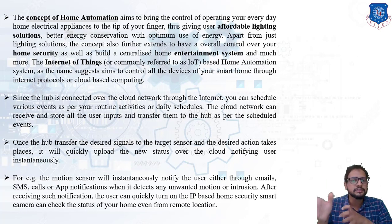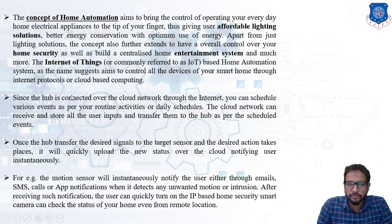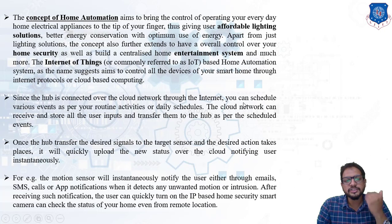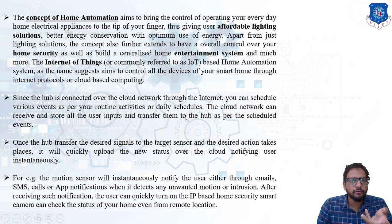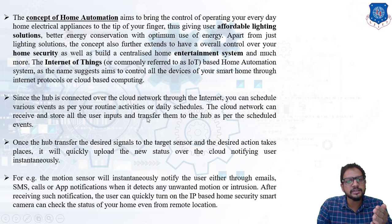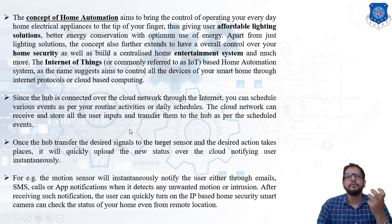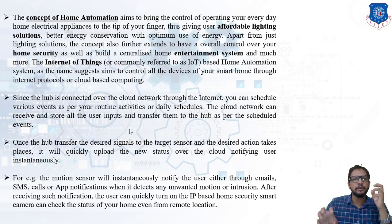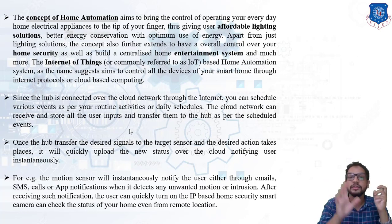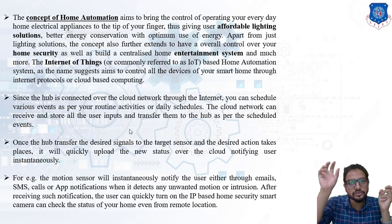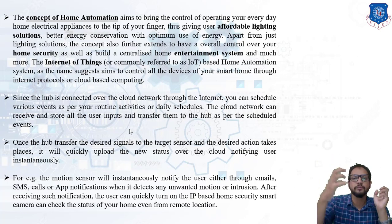The systems included in home automation are: a hub — the centralized control system — connected to the cloud or network through the internet. You can schedule various events as per your routine or daily schedule. For instance, a machine has to be operated at a specific time automatically when you are not at home. The cloud network receives and stores all user inputs and transfers them to the hub as per the scheduled event. The hub operates all the sensors — it is the control system — while the cloud stores all information and receives inputs from both the user and the hub.